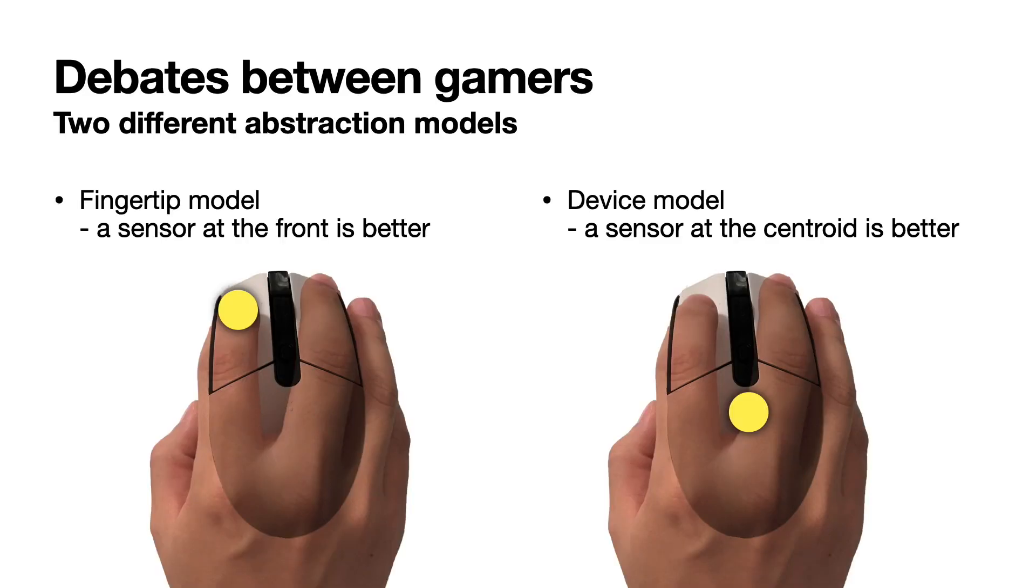So there is debate between gamers, which having two different abstraction models. The difference is where to abstract the whole mouse into a point. The first model claims is the fingertip and the second claims is the centroid of the mouse.